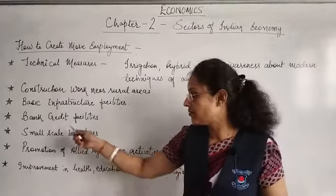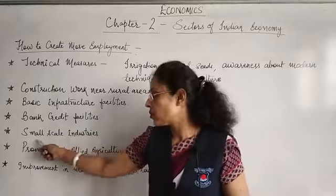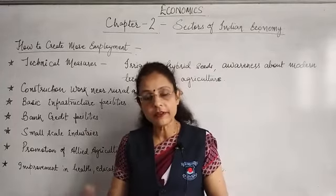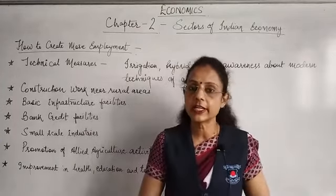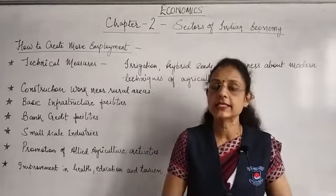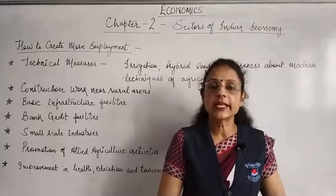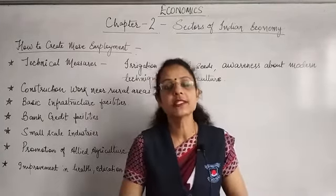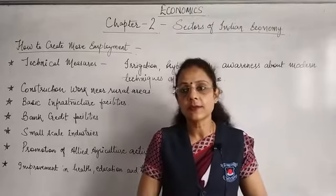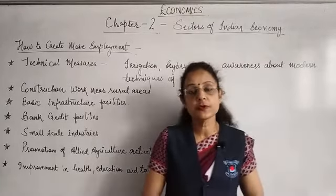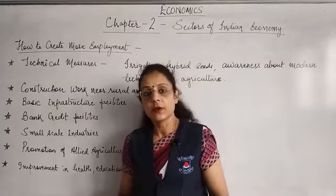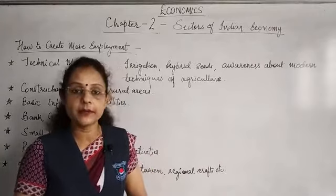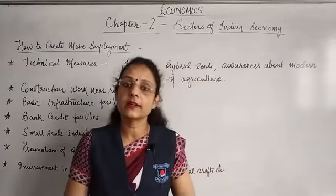This is very important. Now, small scale industries. Apart from promoting the productivity of people in the primary sector, the government can encourage them to set up small scale industries. For example, suppose wheat is produced in large amounts in an area — what is the possibility for a small scale industry there? A flour mill can be established so that farmers don't have to travel far to sell their produce, and they can save the money they would have spent on transport and storage.